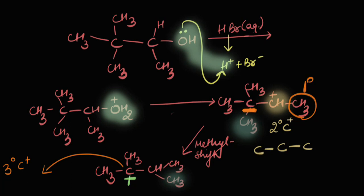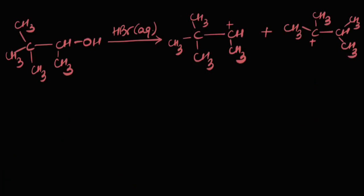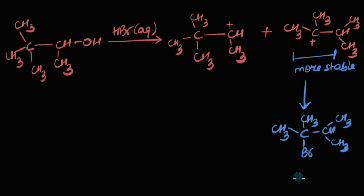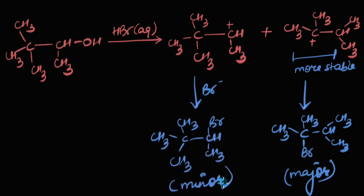So, my major product will be formed by the more stable carbocation. So, there are 2 types of carbocations that can be formed. And this one is the more stable one. And therefore, it will form the major product. Br- would simply attach itself to this carbocation to give the major product. And the other one would be forming the minor product.